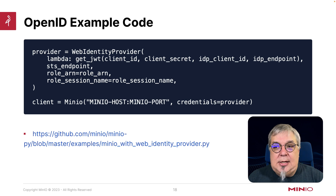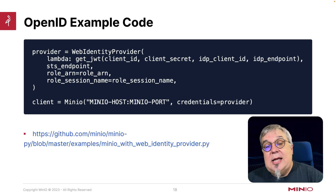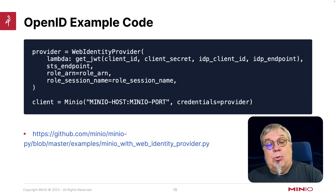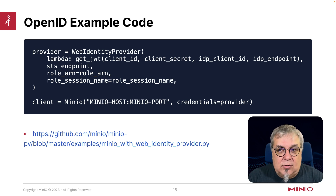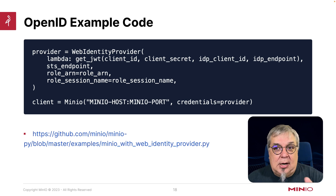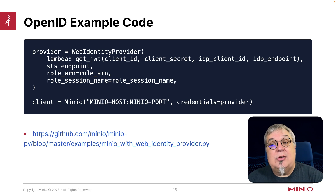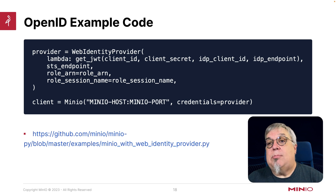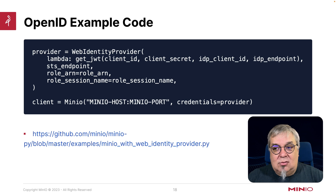Here's example code for OpenID, using the web identity provider. We're going to get that JSON web token using the client ID and client secret. We're going to use the IDP client ID and IDP endpoint, so we talk directly to KeyCloak or Okta. Then we use the STS endpoint — which again is MinIO — and add any roles or sessions needed. When we create our MinIO client, we hand the credentials in from a third party — either LDAP or OpenID — instead of using a username and password. Example code is linked in the description.